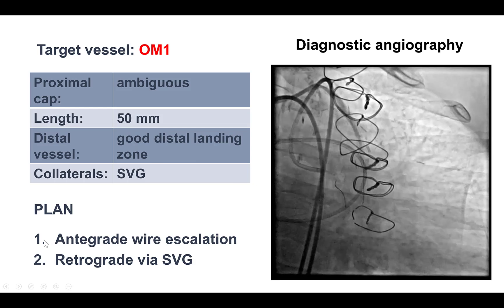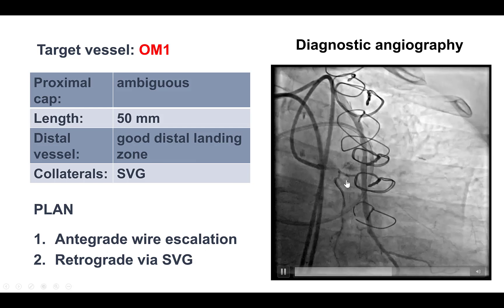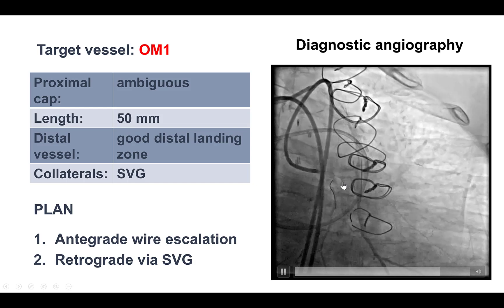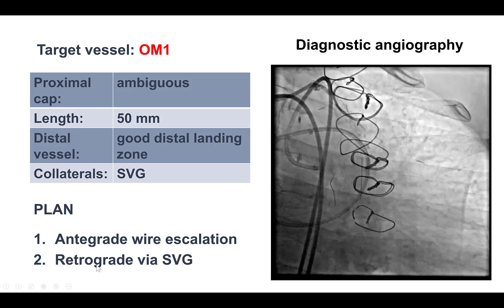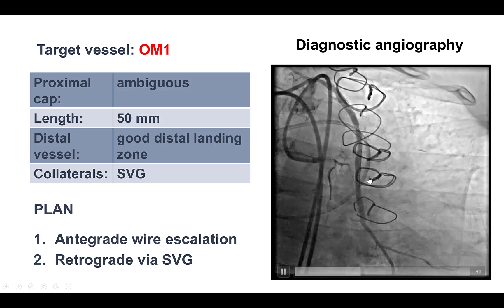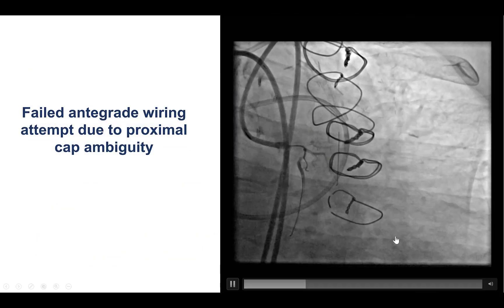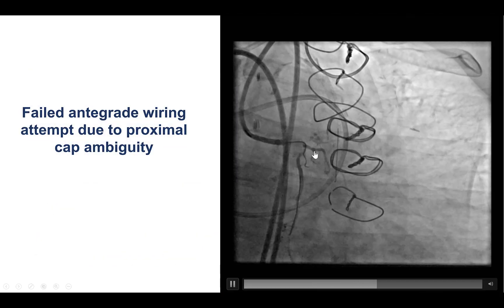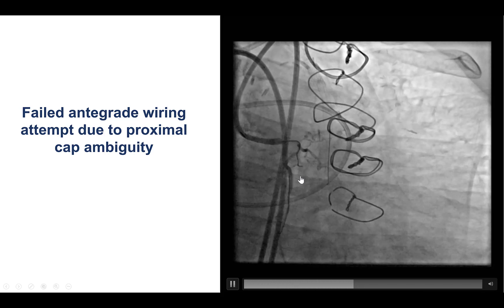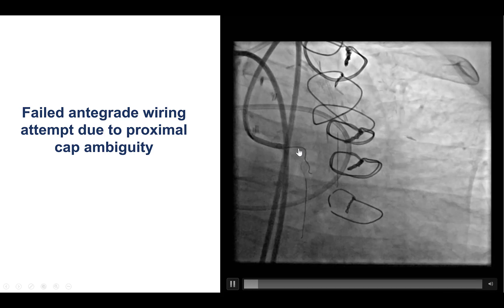Our plan was to first try antegrade wire escalation if we could decipher the ambiguity at the proximal cap, and if that did not work, to go retrograde through the saphenous vein graft. We did a brief attempt for antegrade crossing, but we failed due to ambiguity.